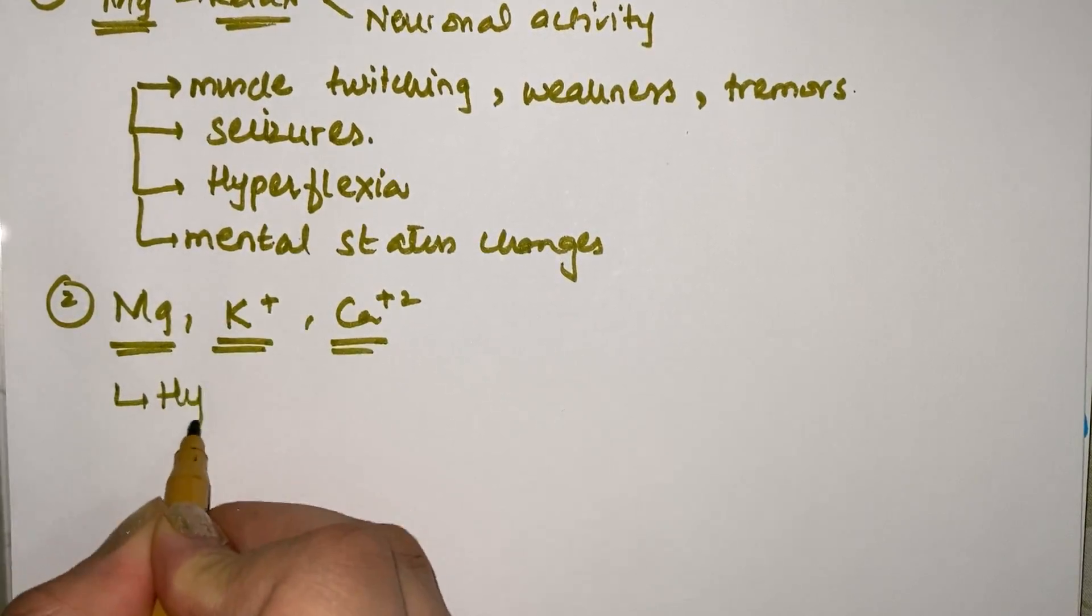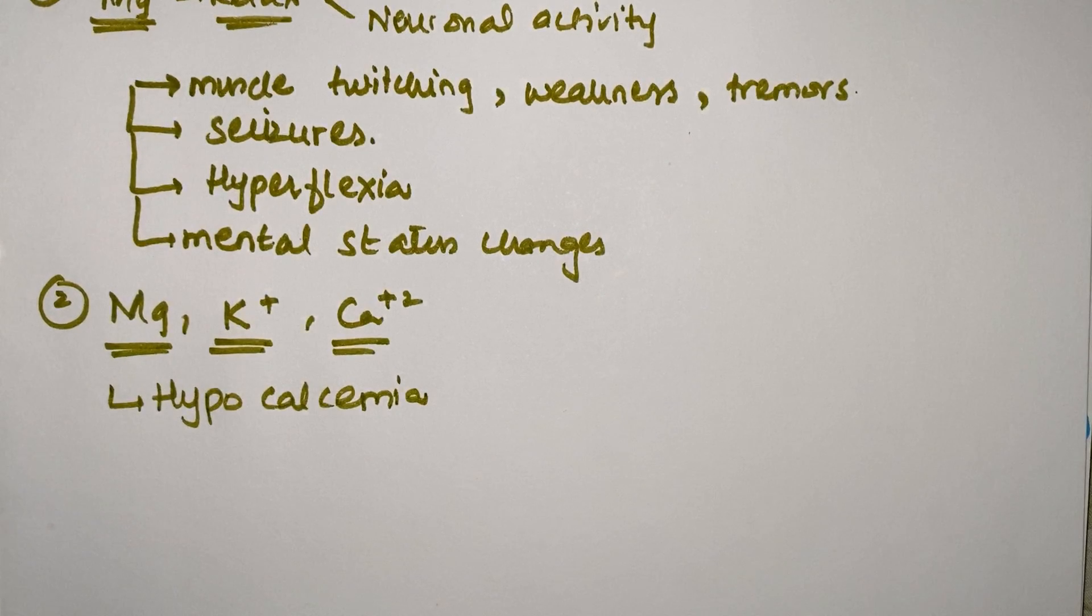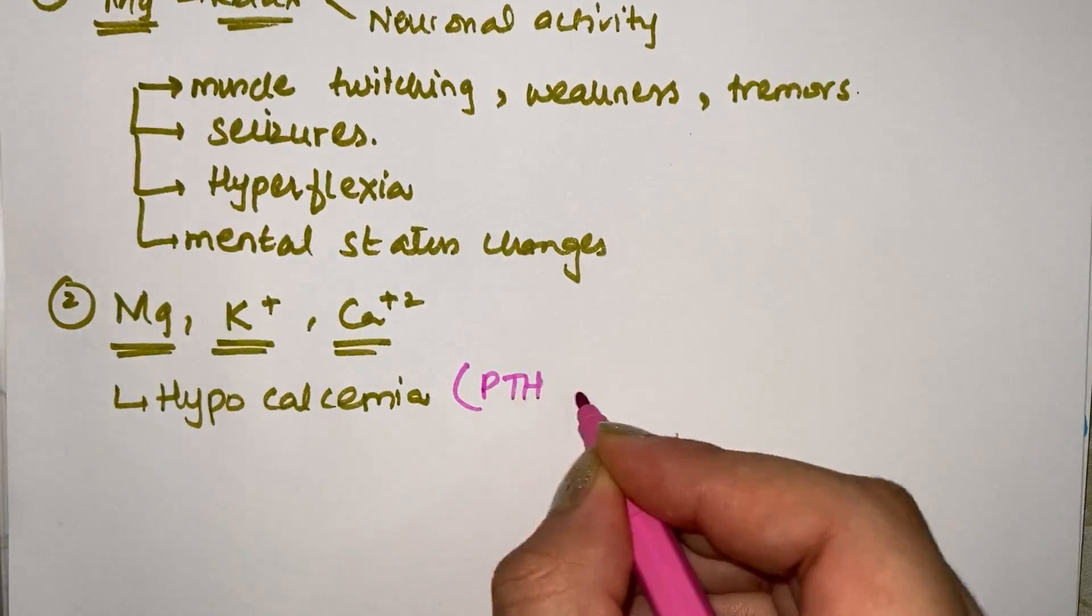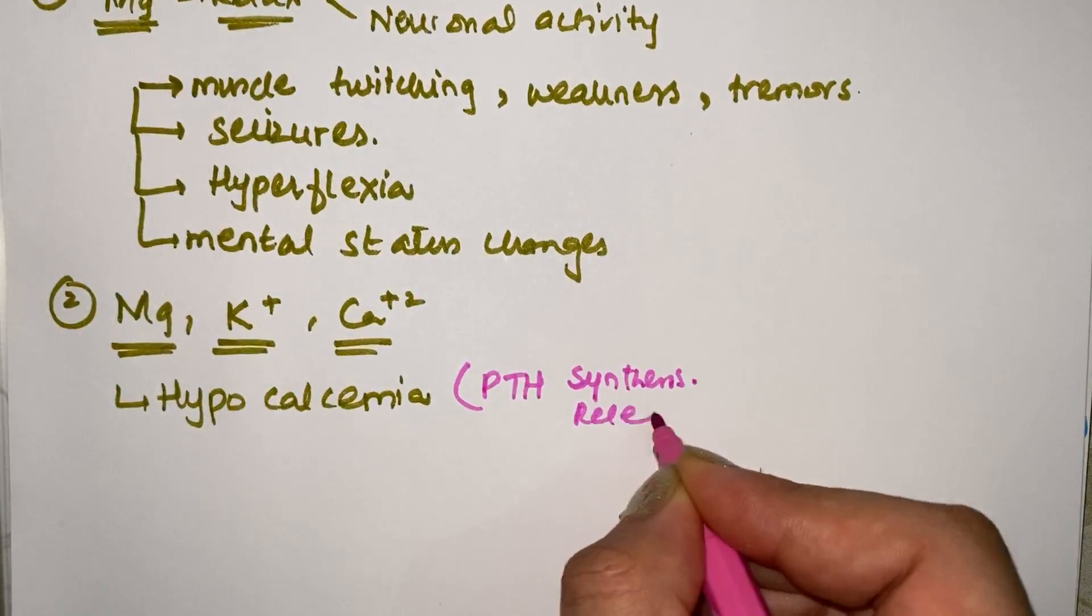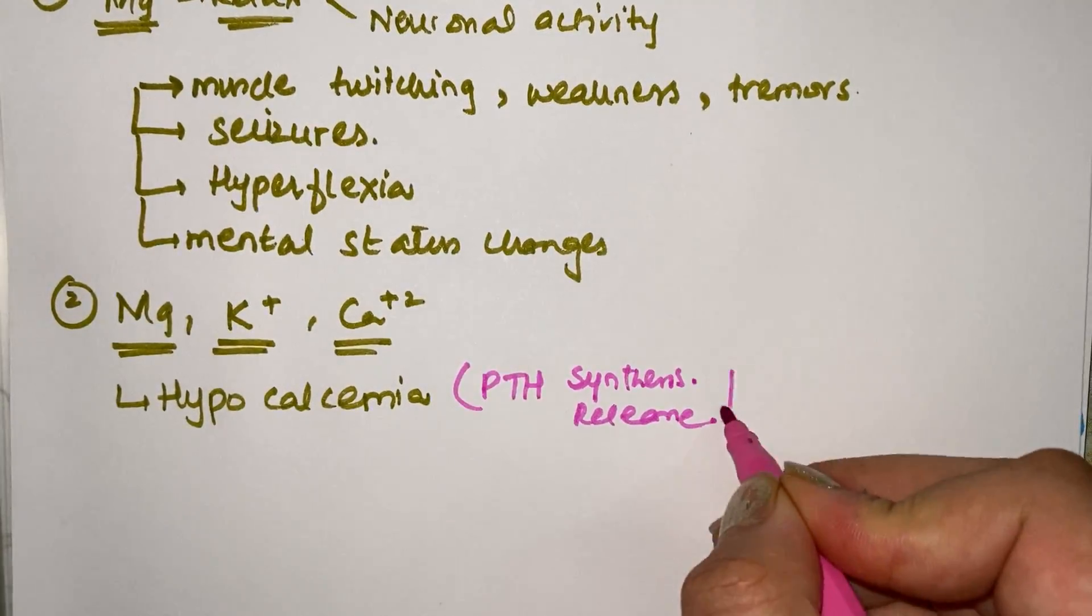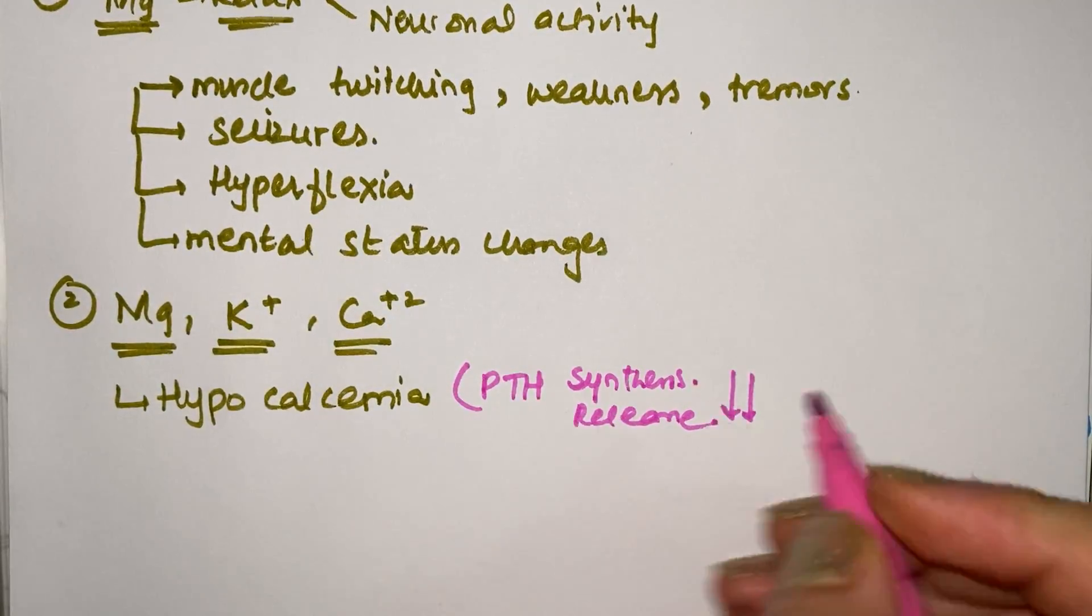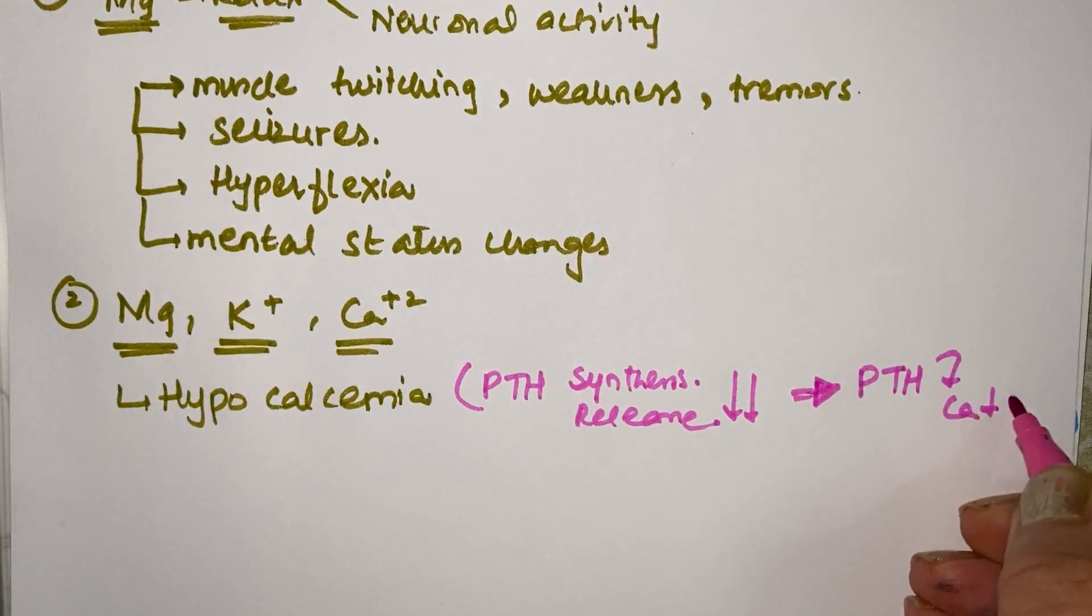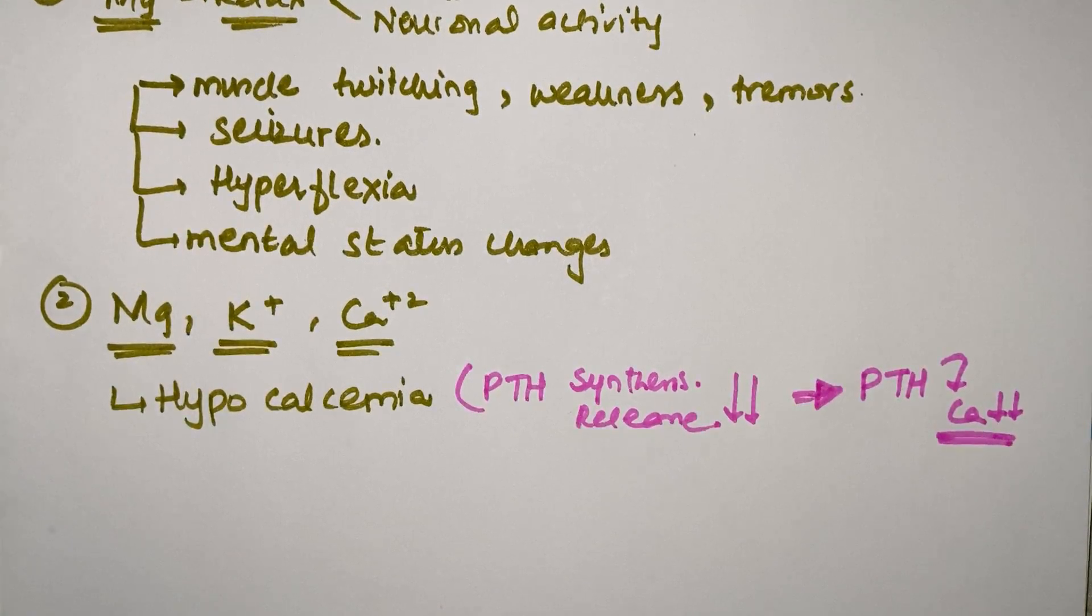Why hypocalcemia? Because we know that magnesium is important for parathyroid hormone release and synthesis. So when there is less magnesium, less PTH is released and synthesized. As a result, low PTH level will ultimately cause low calcium levels. Plus also when less magnesium is absorbed from the kidney, less calcium is absorbed.